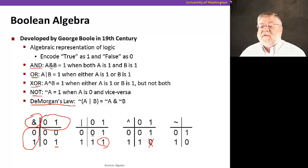And then the unary operator, of course, there's only one variable and it's just the opposite of the value. So that's the basics of Boolean algebra.